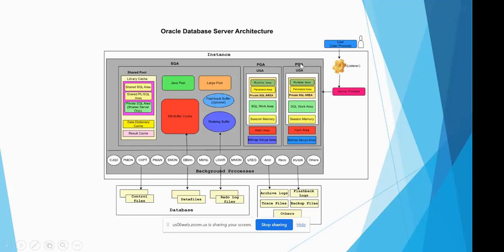The important thing to remember about the PGA is that it is assigned for each and every user in the database. Whatever information is present inside the PGA is specific and private to that user — no other user in the database can access the information present inside another user's PGA.